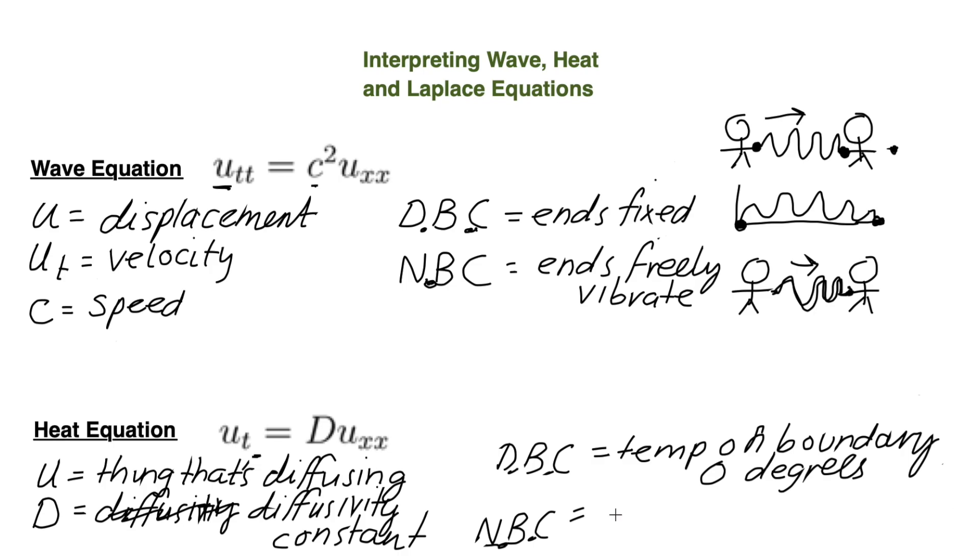So if it's a homogeneous boundary condition, then it just means that it is insulated. Flow of heat on boundary, insulated if it's fixed to zero.